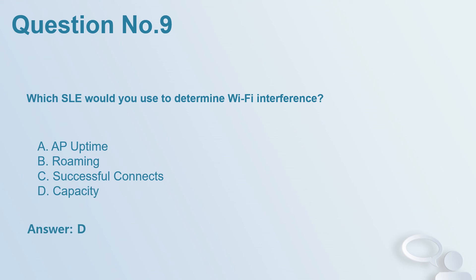Question number 9: Which SLE would you use to determine Wi-Fi interference? A. AP uptime. B. Roaming. C. Successful connects. D. Capacity. Answer: D.